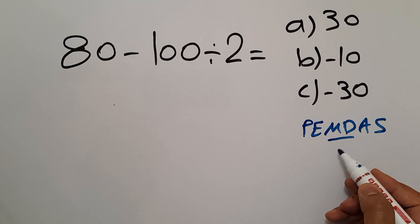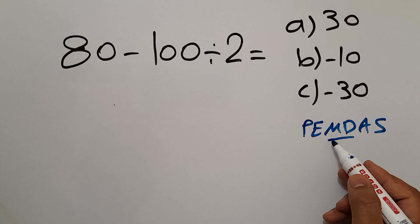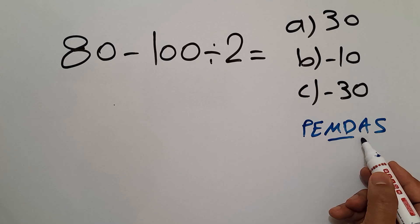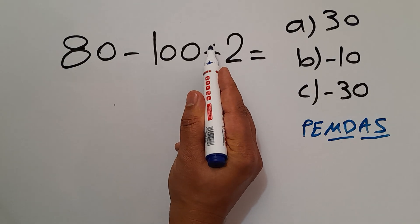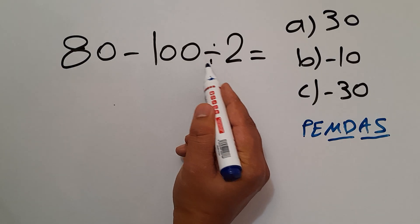Remember that multiplication and division have equal priority and we have to go from left to right. And the same applies to addition and subtraction. So here we have to do this division first.